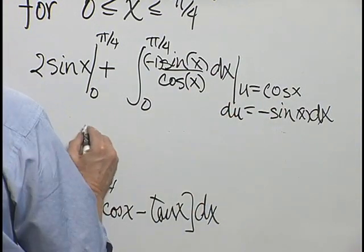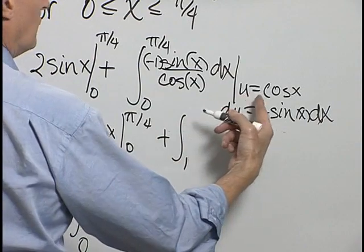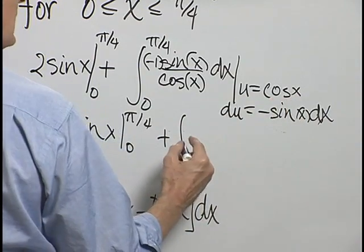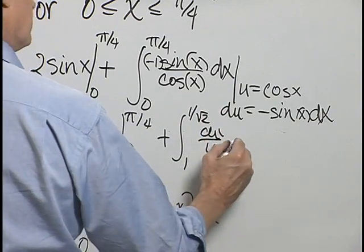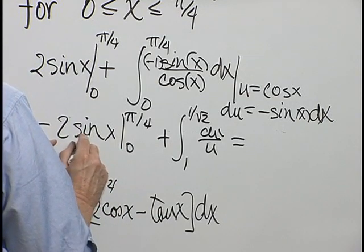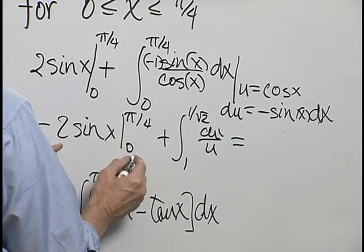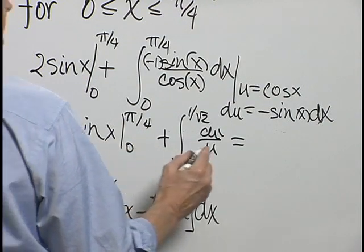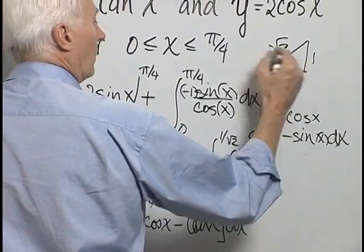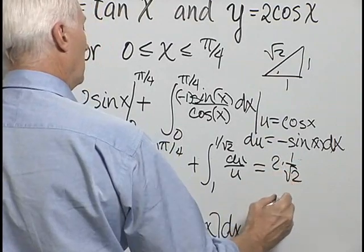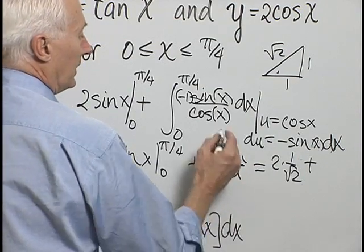We have 2 sine x evaluated from 0 to pi over 4, plus the integral with limits changed by substitution. When x is 0, u is cosine 0 which is 1. When x is pi over 4, u is cosine of pi over 4, which is 1 over square root 2. So we have the integral from 1 to 1 over root 2 of du over u. Our antiderivative 2 sine x evaluated from 0 to pi over 4 is simply twice the sine of pi over 4, since subtracting sine 0 is subtracting nothing — so we have 2 times 1 over root 2. The natural logarithm of u is the antiderivative of 1 over u, evaluated from 1 to 1 over root 2.